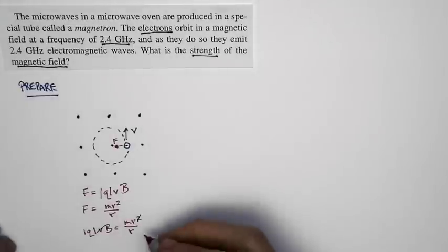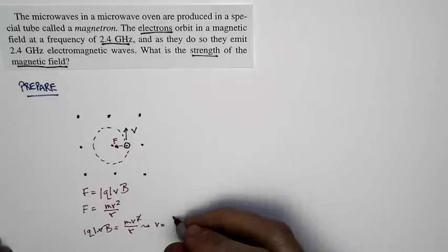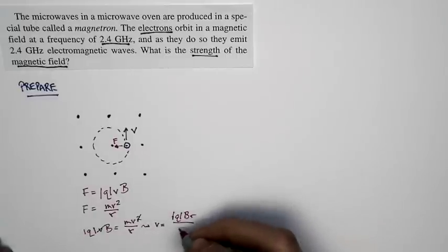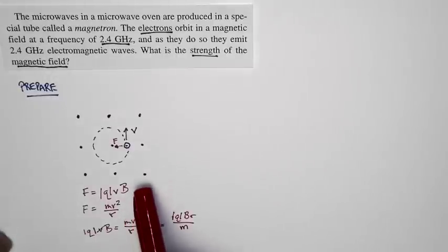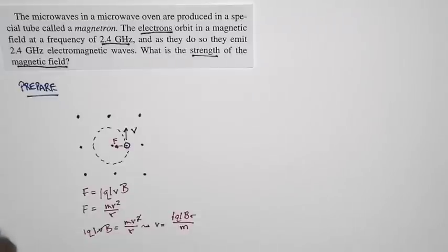And I get the following. The speed is equal to the magnitude of q, magnitude of the charge times B times r divided by m. Now you could pull this from the chapter, but I prefer to start from first principles. I prefer to start from these basic relationships and kind of get to this point because it helps me wrap my mind around the problem.